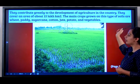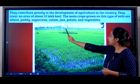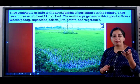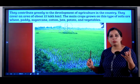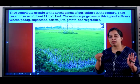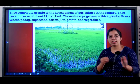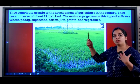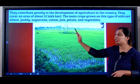The main crops grown on alluvial soil are wheat, paddy, sugarcane, cotton, jute, potato and vegetables. Just remember any three — wheat, paddy, sugarcane. You eat chapati every day, you eat rice every day, you like sweet things so sugarcane. What you eat on an everyday basis is grown on alluvial soil. What you wear also — cotton — but just remember wheat, paddy, sugarcane.